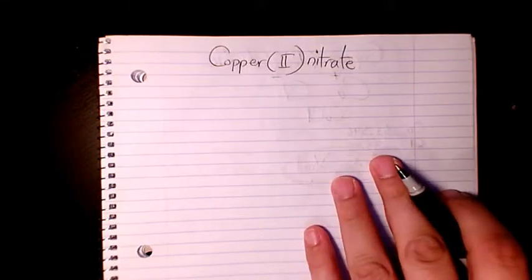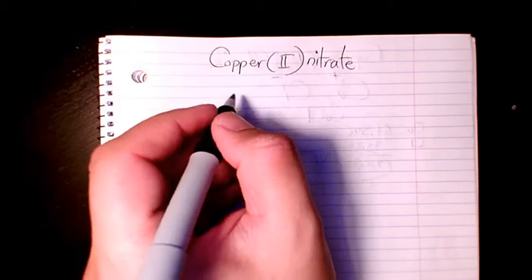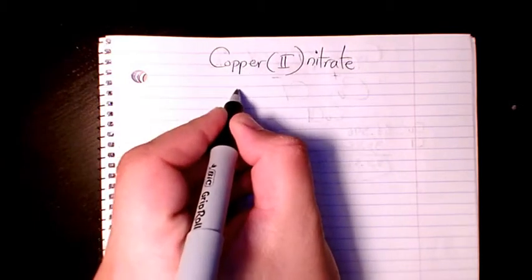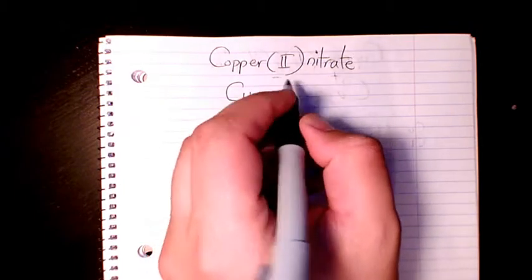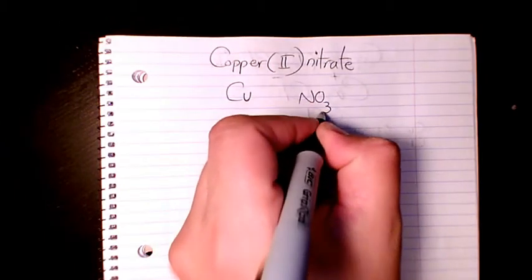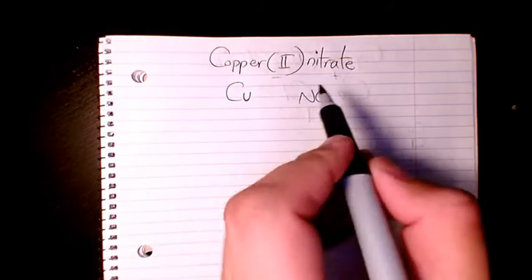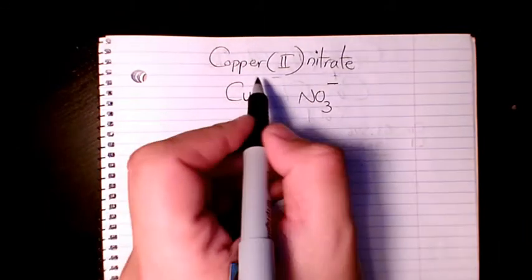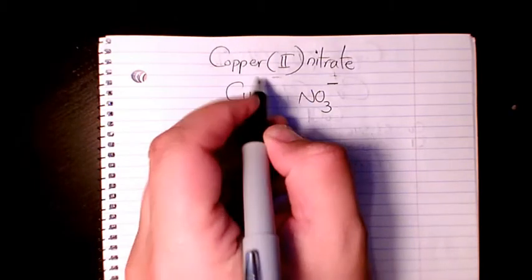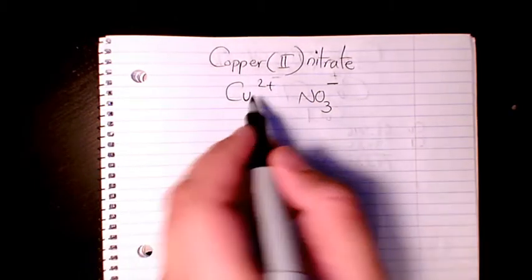So first of all I start with the molecular formula. Copper is Cu, nitrate is NO3. NO3 is the polyatomic ion and the charge is negative one. Cu is two as you see it here, so it's going to be plus two.